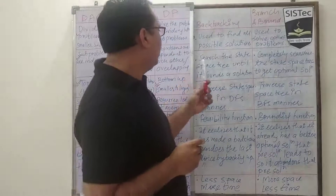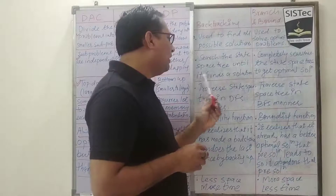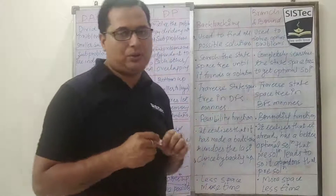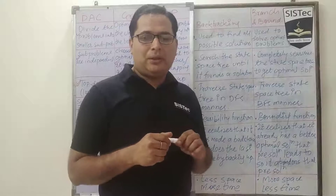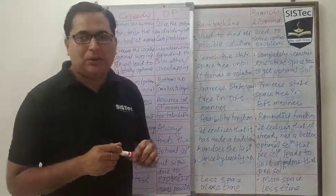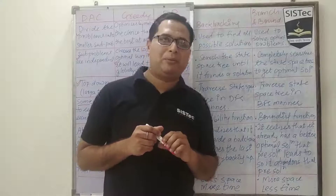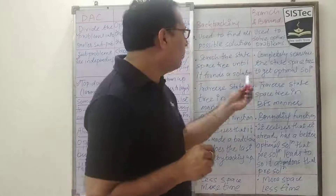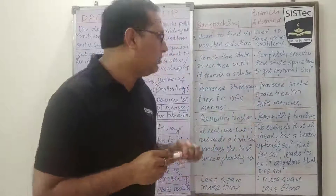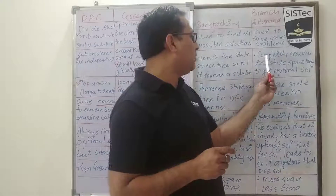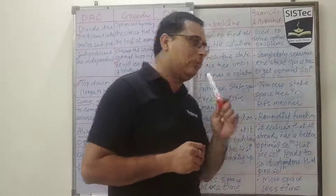Point number two: backtracking searches the state space tree until it finds a solution. In the case of branch and bound, it completely searches the state space tree to get the optimal solution — without full comparison, we cannot confirm which solution is truly optimal. That's why branch and bound completely searches the state space tree.